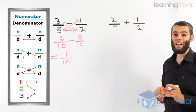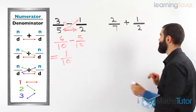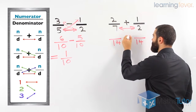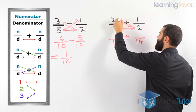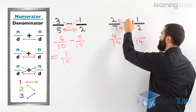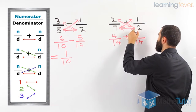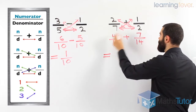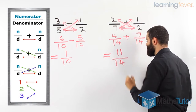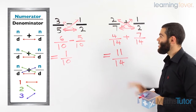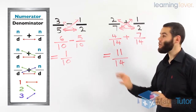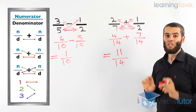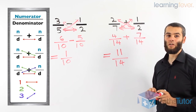Two-sevenths plus one-half — denominators are different, so we follow the same process. First, multiply the denominators: two times seven is fourteen. Then, numerator times denominator: two times two is four. And then, one times seven is seven. Fourteen and fourteen — that's our common denominator. Four plus seven is eleven, so eleven over fourteen is our answer. We can't simplify further. It's as simple as that. Remember this process especially when you're not using a calculator — you'll always get it right.